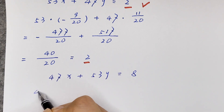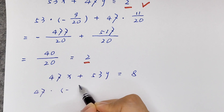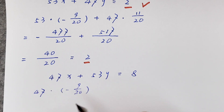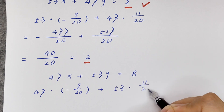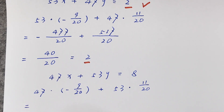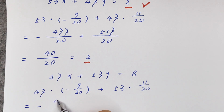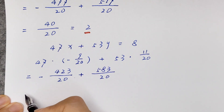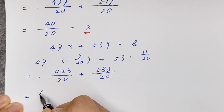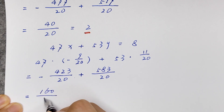Now checking equation 2: 47 times (negative 9 over 20) plus 53 times (11 over 20). It will be equal to negative 423 over 20, plus 583 over 20. It will be equal to 160 over 20.